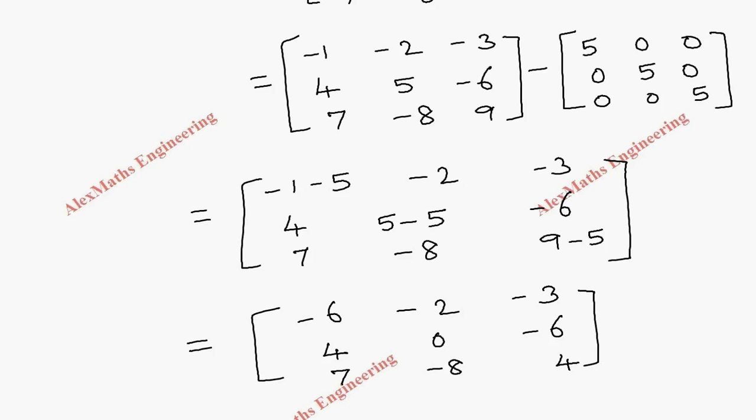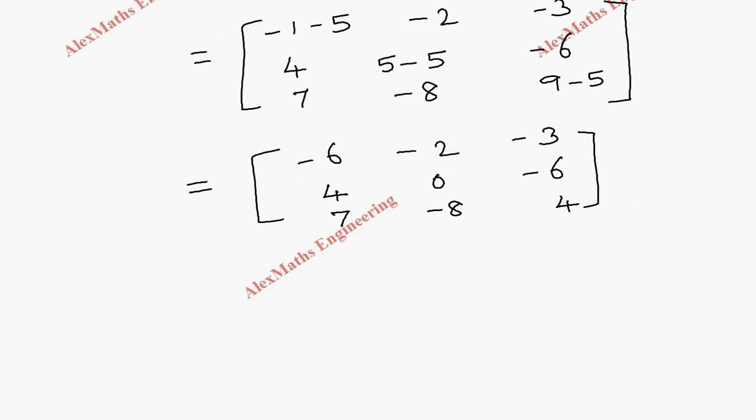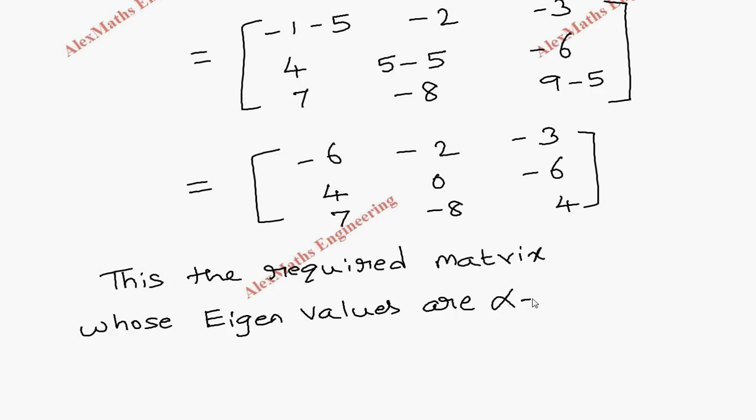And this is the required matrix whose eigenvalues are alpha minus 5, beta minus 5, and gamma minus 5.